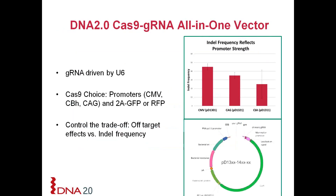What DNA 2.0 offers is convenience in a simple all-in-one vector design where both the guide RNA and the Cas9 protein are expressed off the same plasmid. So if you have a target of interest, that 20-base pair sequence is cloned into this vector using our convenient cloning system, and the rest of the components are already on the plasmid. Let me quickly go over some of these components.